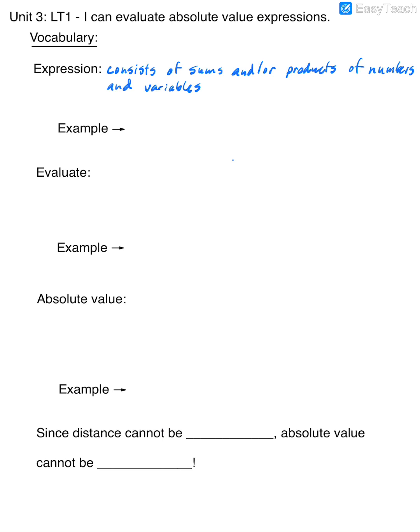An example of that would be 7 times x — that's an expression where it's a multiplication, 7x. You could have 2x minus 9. You could also have x squared plus 10x minus 2. So there are lots of different expressions, some very long, some very short. It just depends on what you're given.